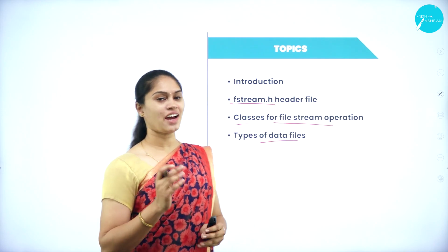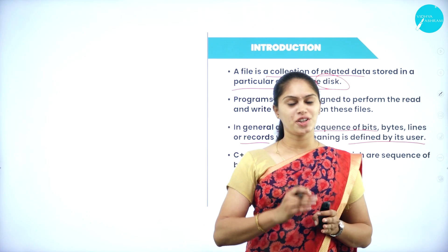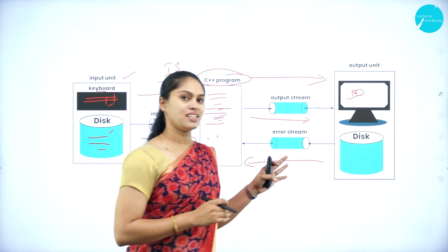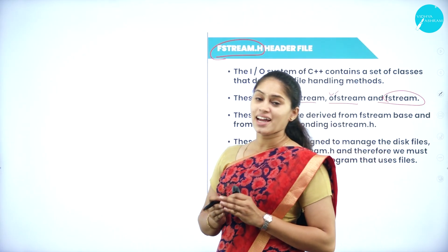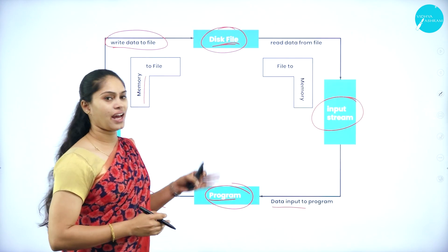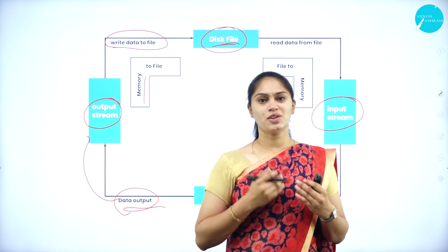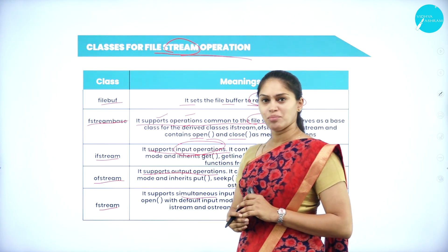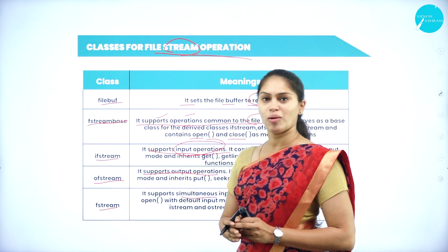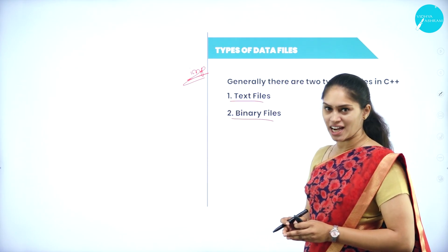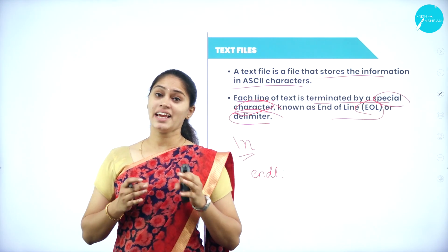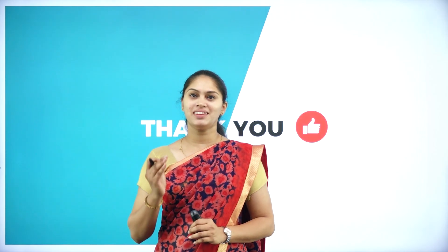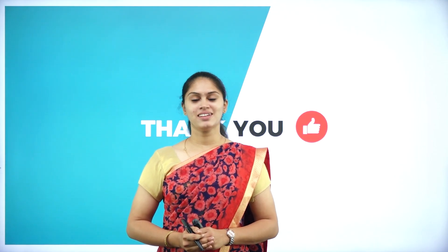Let me brief today's session. I discussed the introduction to files — what you mean by file, streams in files that is input, output and error streams, the flow diagram of input and output along with error stream. Then fstream.h header file and its flow diagram, classes for file stream operations — filebuf, fstreambase, ifstream, ofstream, and fstream — and finally the types of data files: text file and binary file, with two key points to remember for each. I will meet you in the next session with the next topic of this file handling chapter. Until then, keep learning, keep growing. Thank you very much.